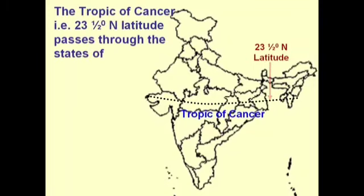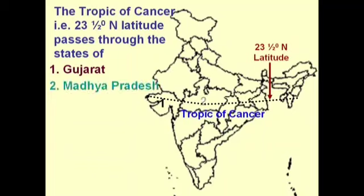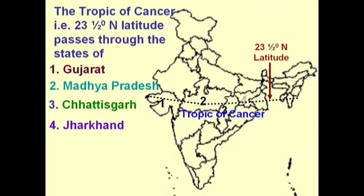These two lines exactly recognize the position of a particular place. According to the longitudinal extent, India is situated from 68 degrees 7 minutes East to 97 degrees 25 minutes East. Latitudinal extent refers to lines which influence the duration of day and night.